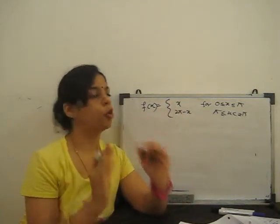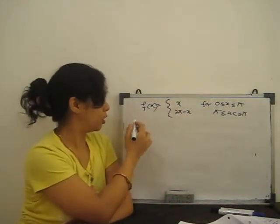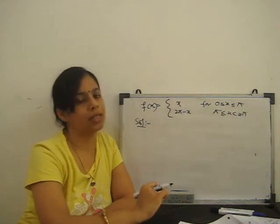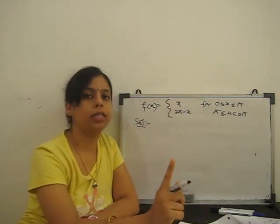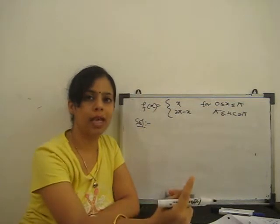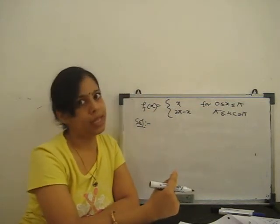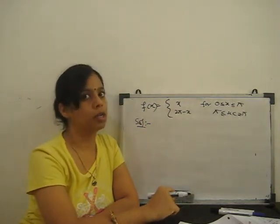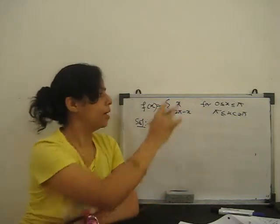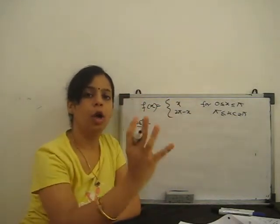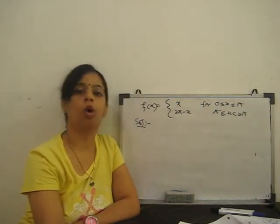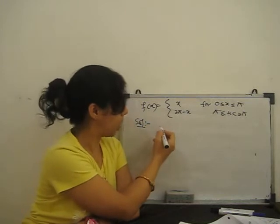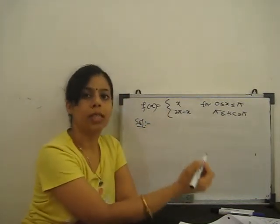We have to find the Fourier series. Note: x and 2π − x look like odd functions, but if our range is given from minus π to plus π, we would say this is an odd function and find only bn (with a0 and an equal to zero). But when the limit is 0 to 2π or c to c+2π, we must find all values: a0, an, and bn.